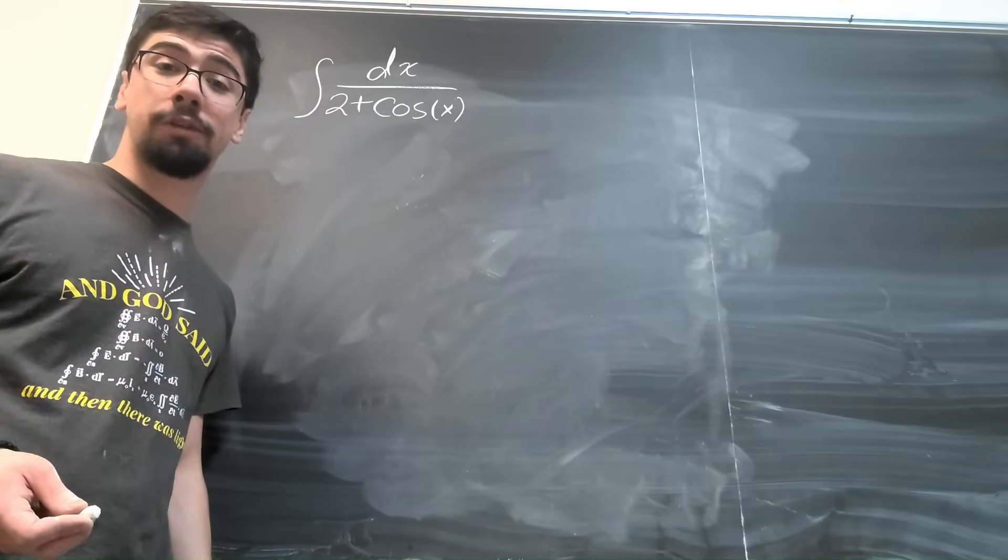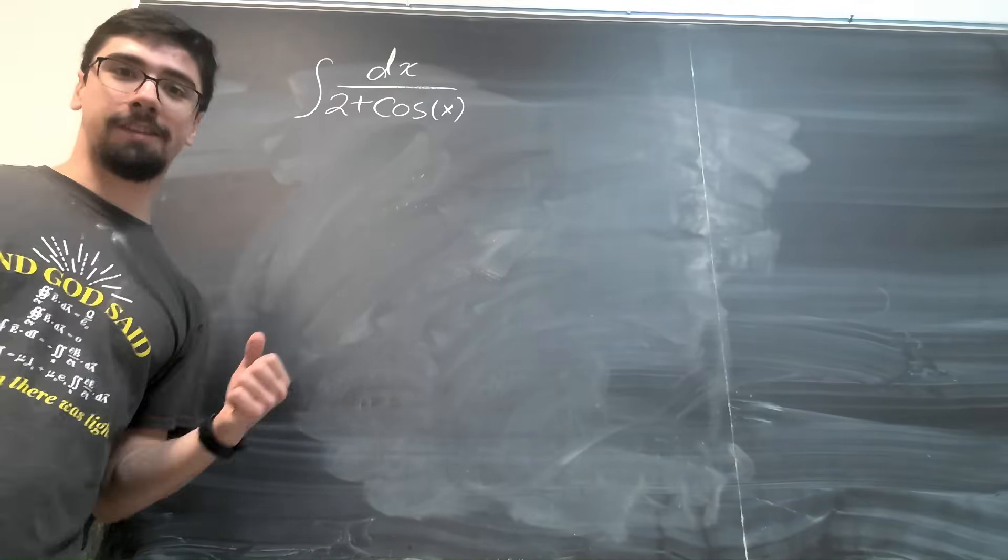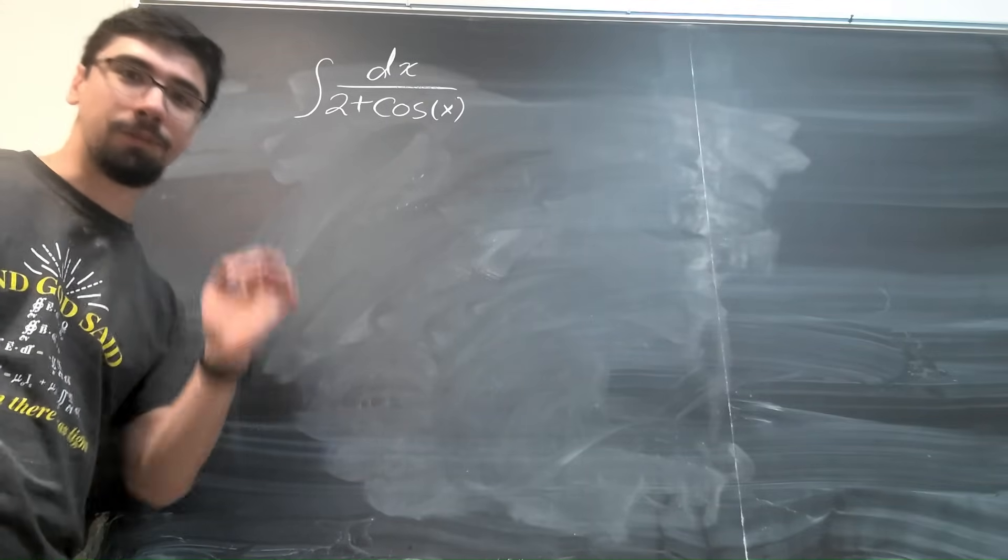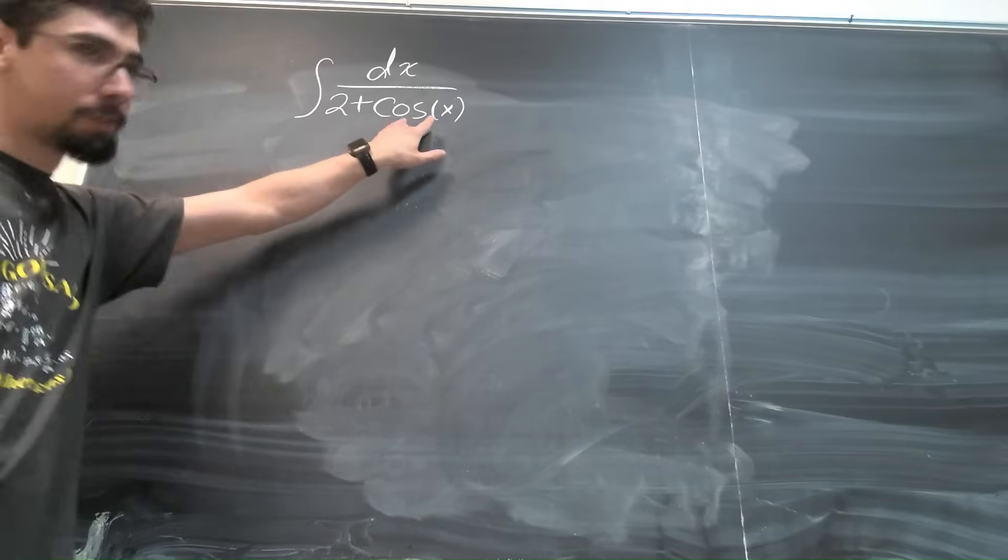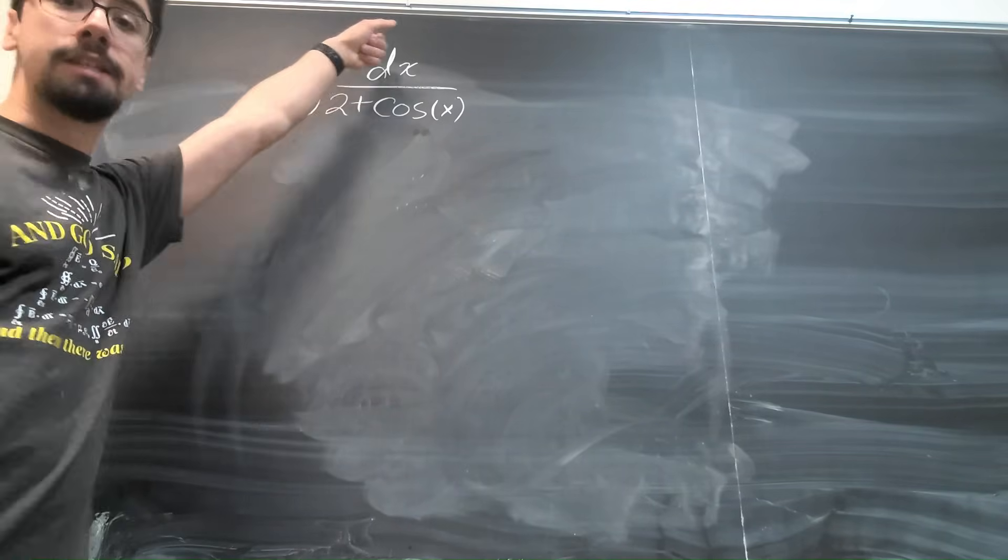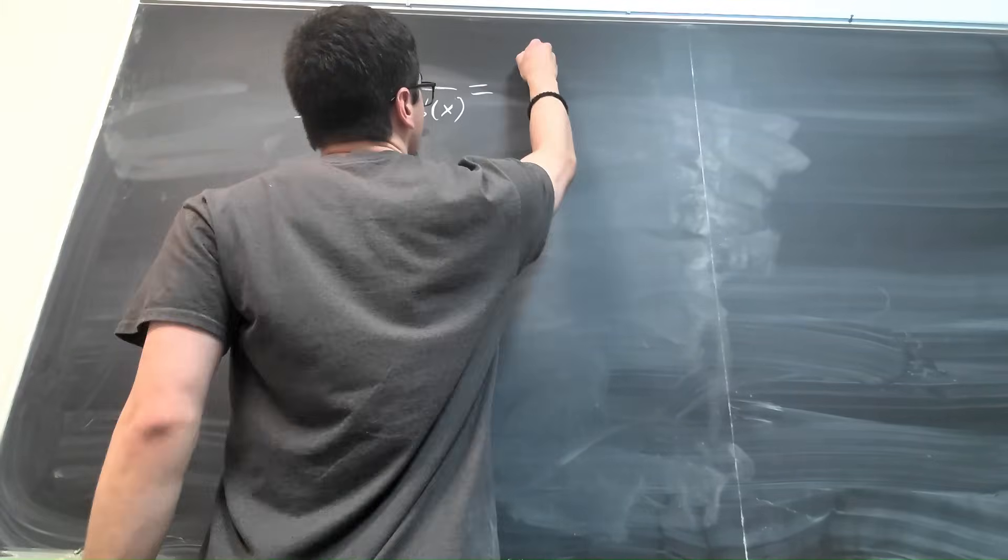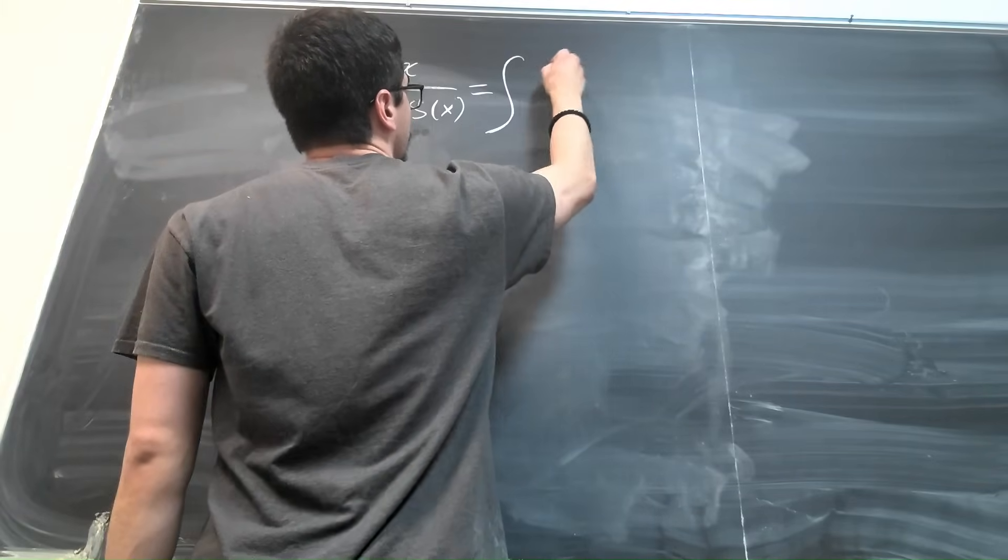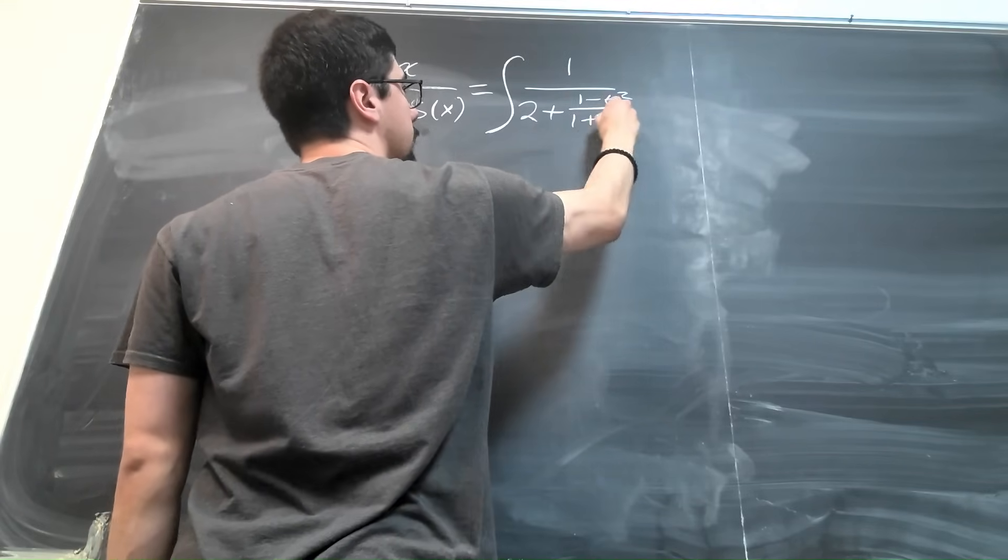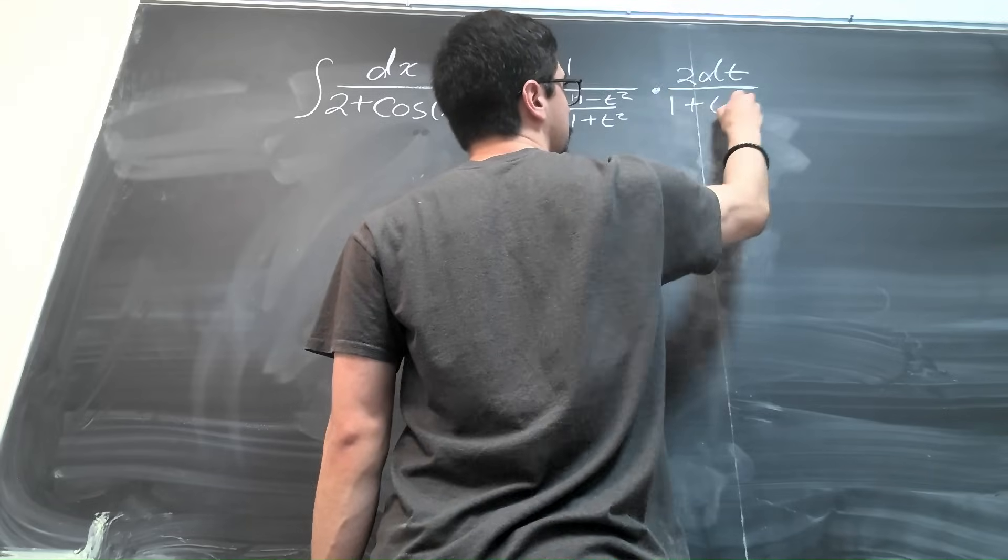The universal trig sub is especially great for functions of this shape, where you have something with trig functions in the denominator. Trying to use other techniques with this thing would be monstrous. Universal trig sub really is the way to go here, and let me show you. So we have cosine of x, and if we remember, that means that we have to replace cosine with 1 minus t squared over 1 plus t squared, and we replace dx with the same thing that we had before. So this integral becomes the integral of 1 over 2 plus 1 minus t squared over 1 plus t squared times 2 dt over 1 plus t squared.